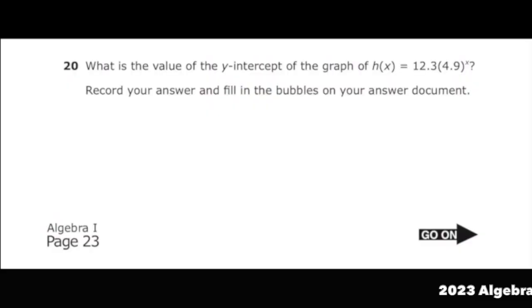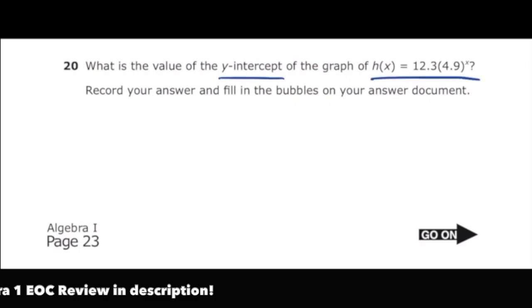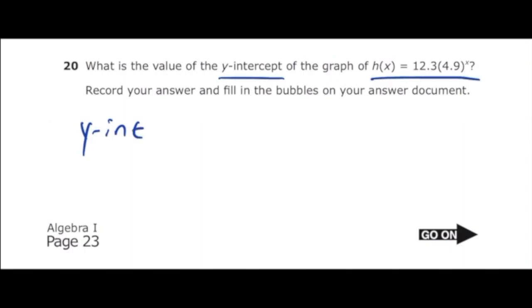This is number 20 from the 2022 Algebra 1 EOC. What is the value of the y-intercept of the graph of h of x is equal to 12.3 times 4.9 raised to the x power? We know that anytime we're looking for the y-intercept, that's just going to be the point where x is equal to 0. So I'm going to go to the function they give us and I'm going to plug in 0 for x and just plug that into my calculator and see what I get. That's going to be 12.3 times 4.9 raised to the power of 0. I put that into my calculator and I should get 12.3.